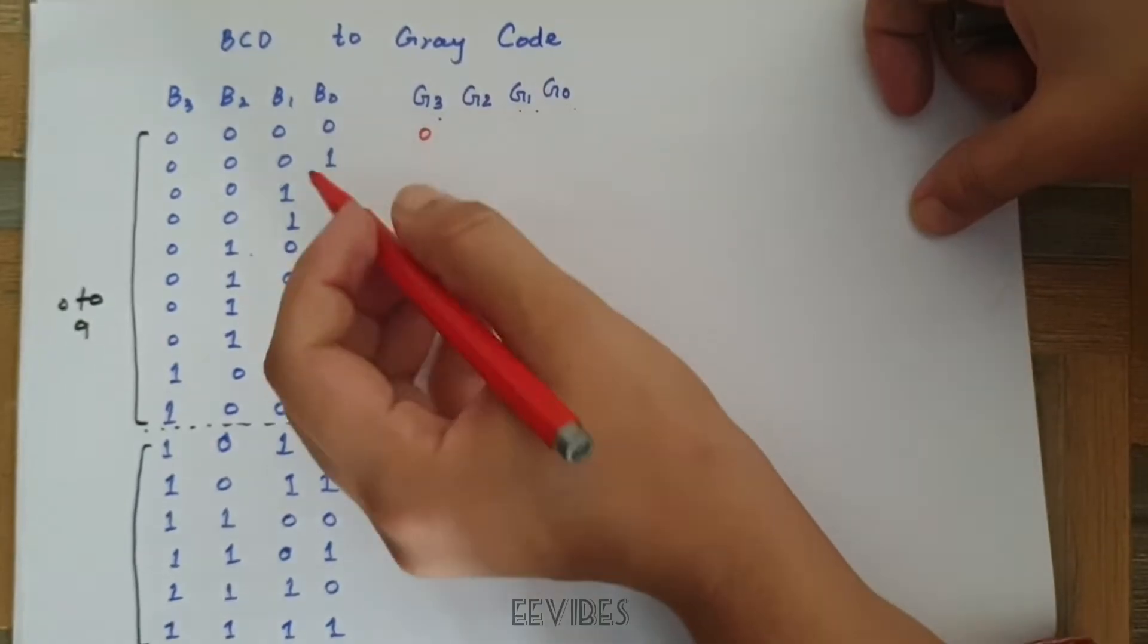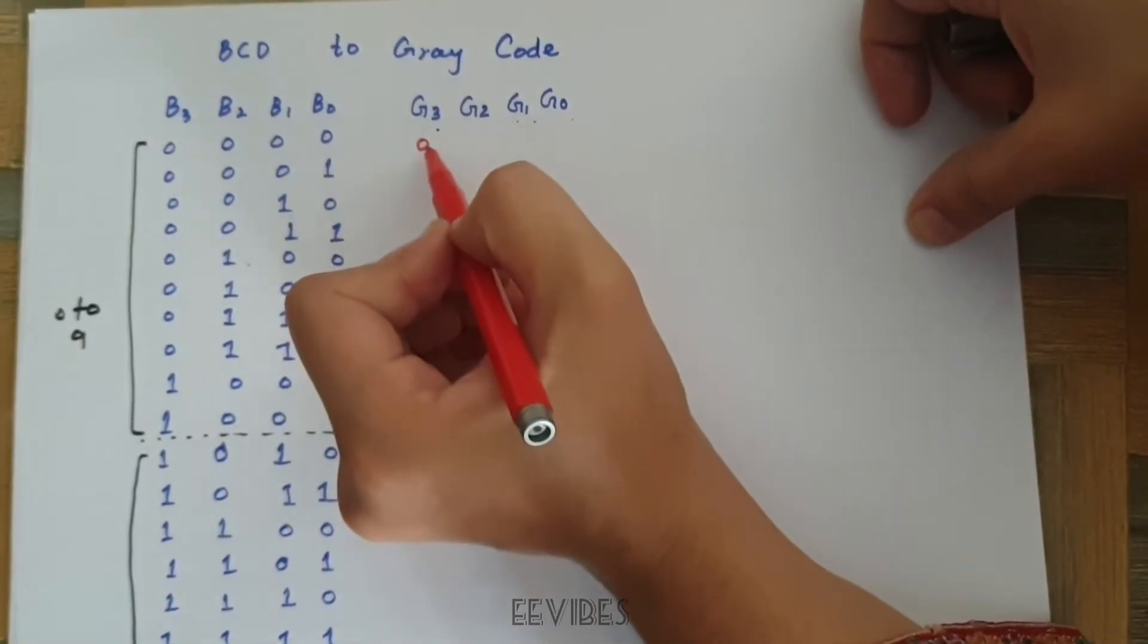The first bit is written as it is, starting from the MSB, the first bit is written as it is.